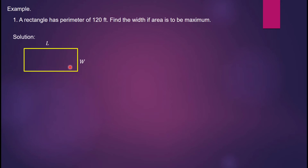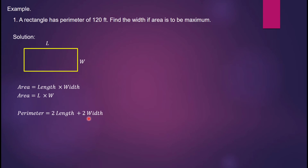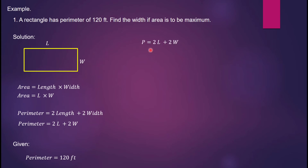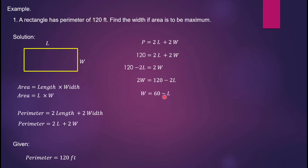The formula for the area of a rectangle is A = L × W. The perimeter is P = 2L + 2W. Given that the perimeter equals 120 feet, substitute: 120 = 2L + 2W. Solving for W: 2W = 120 − 2L, so W = 60 − L.